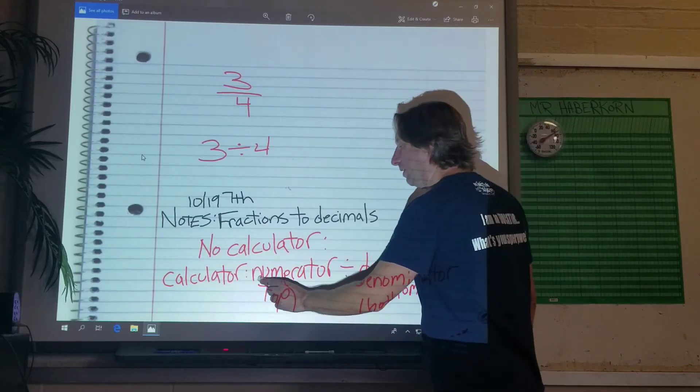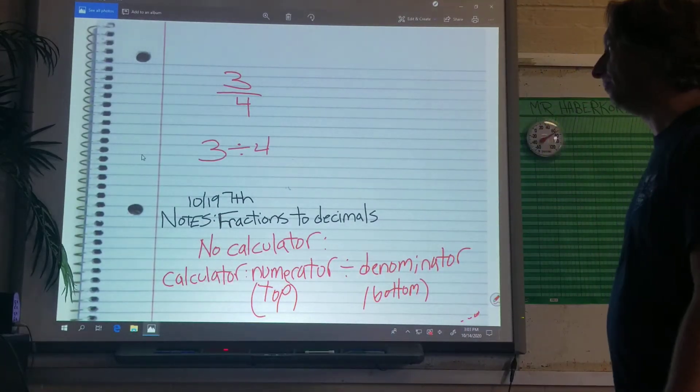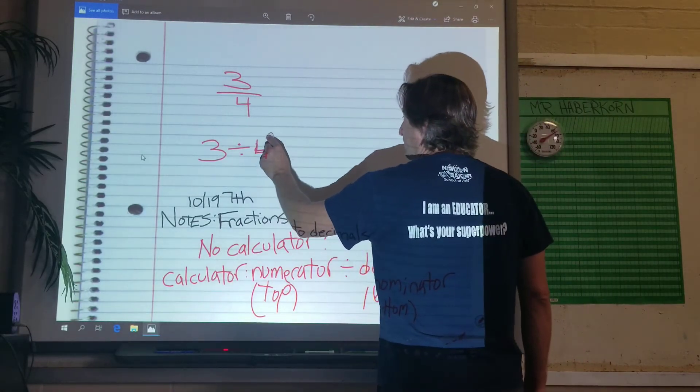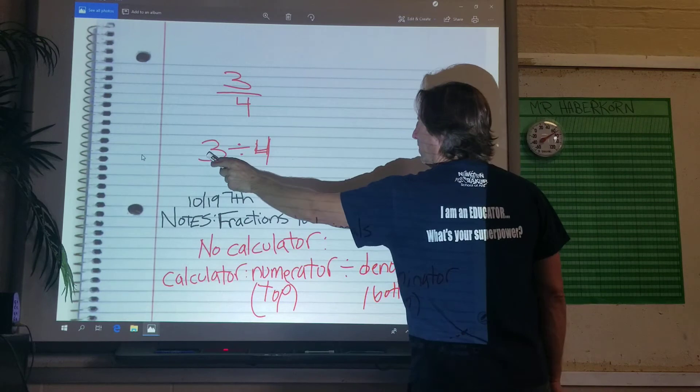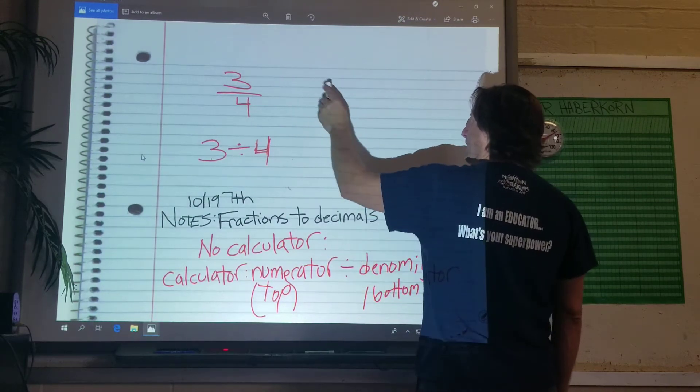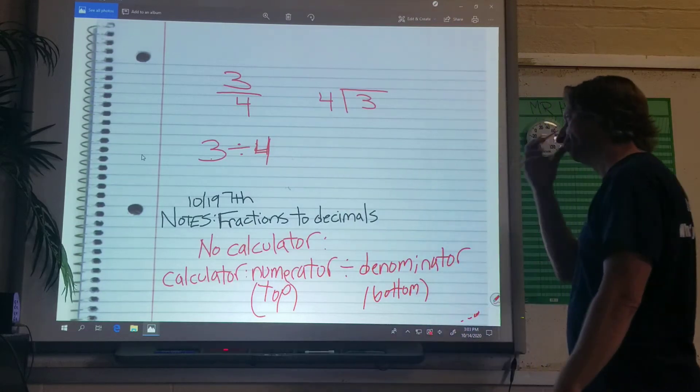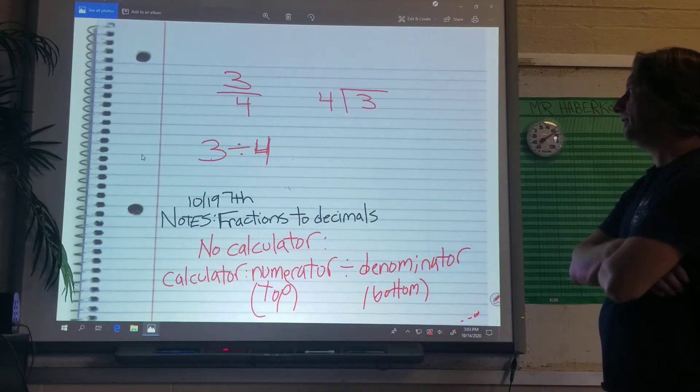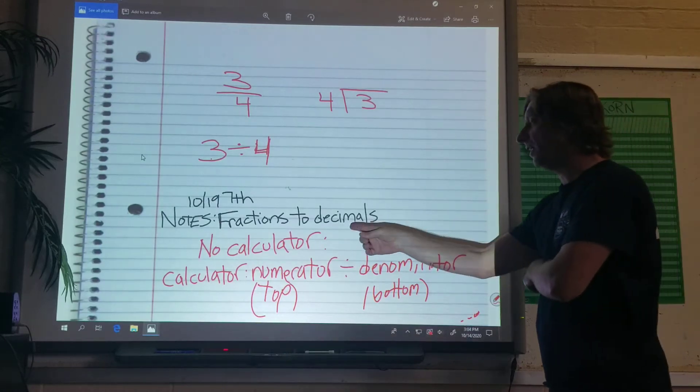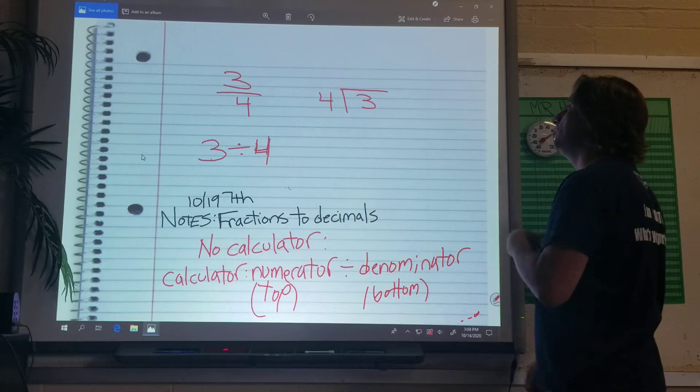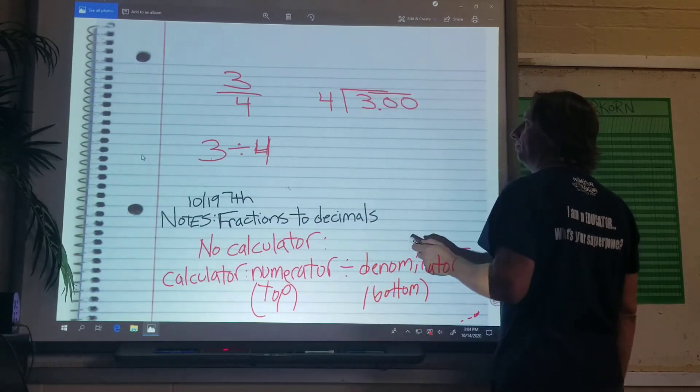Alright, so if you have to do it with a calculator, do it that way. But if you can divide, I want you to divide, alright? Now the biggest mistake is three divided by four. If you're going to divide this without a calculator, this number goes in the bracket. Your top number. Alright? Now, people might say, but four doesn't go into three. That's okay, because we're getting a decimal, right? So what I like to do is immediately put .00 after it, okay?